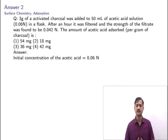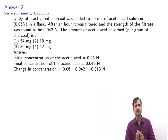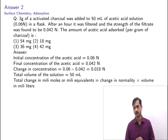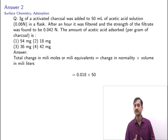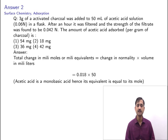The initial concentration of acetic acid is 0.06 normal; after adsorption it is 0.042 normal. The change in concentration is 0.06 − 0.042 = 0.018 normal. The total volume is 50 mL. The total change in milliequivalents = 0.018 × 50. Since acetic acid is a monobasic acid with one replaceable hydrogen, its equivalent equals its mole.